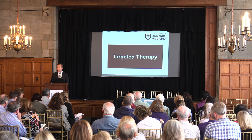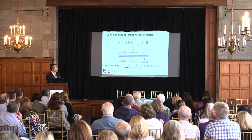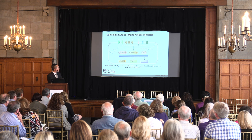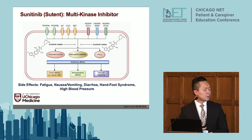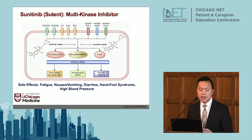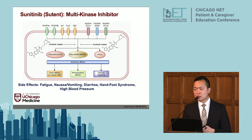The next category of systemic treatments is called targeted therapy — drugs that target specific pathways that tumor cells use to grow and spread. Most of these are oral pills taken daily. The first drug is called sunitinib, or Sutent, which inhibits multiple receptors on the cell, including PDGFR, KIT, FLT3, and vascular endothelial growth factor — a way that tumors make new blood vessels. Common side effects include feeling tired, nausea, vomiting, diarrhea, hand-foot syndrome (redness, pain, and peeling in the hands and feet), and high blood pressure.